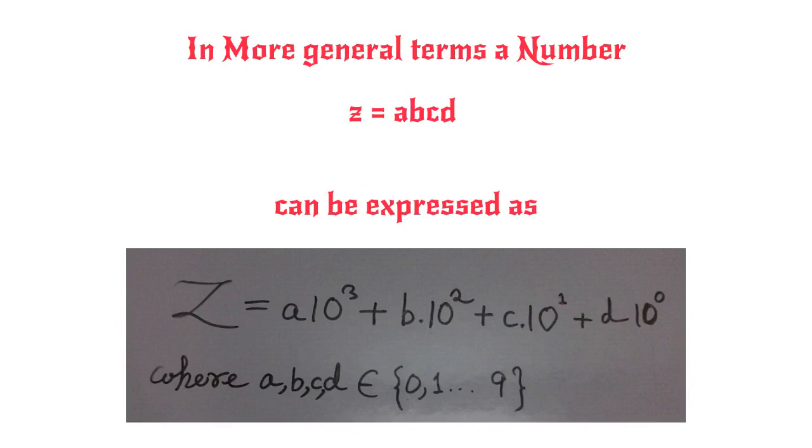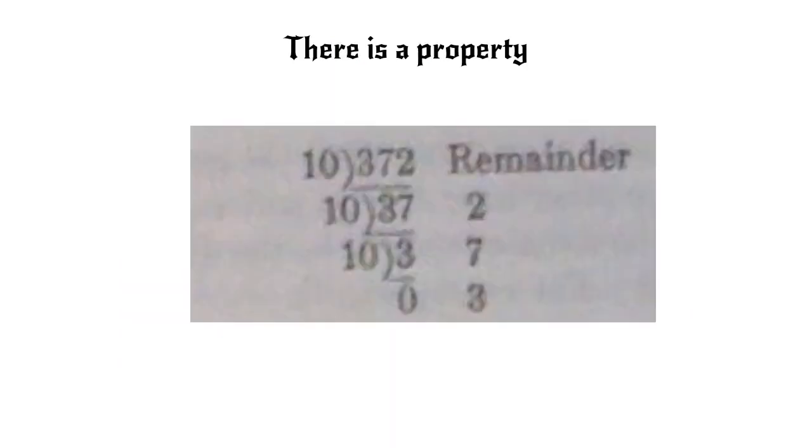Where the digits a, b, c, and d are integers from 0 to 9. We note a property that on successive division of z by 10, the coefficients d, c, b, and a are the left remainders.